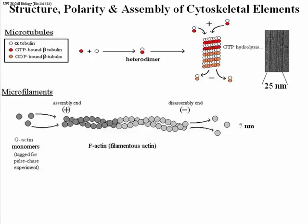Microfilaments are composed of actin monomers called G-actin, meaning globular actin. Remember that polypeptides can be globular or fibrous — G-actin is globular. These are the monomers, and they can be radioactively labeled for experiments. You can show that there's an assembly end: they add at one end and come off at the other, much like microtubules.